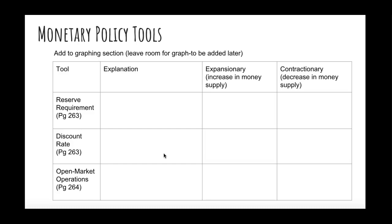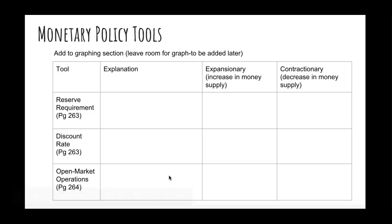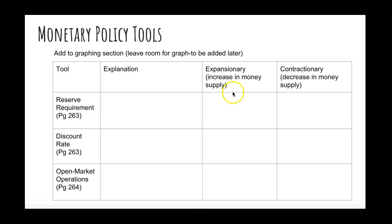For the chart, you'll also fill in expansionary monetary policy — what you'd do to each tool to increase the money supply — and contractionary monetary policy — what you'd do to decrease the money supply. Pause the video now, read those three sections on pages 263 and 264, and then come back.